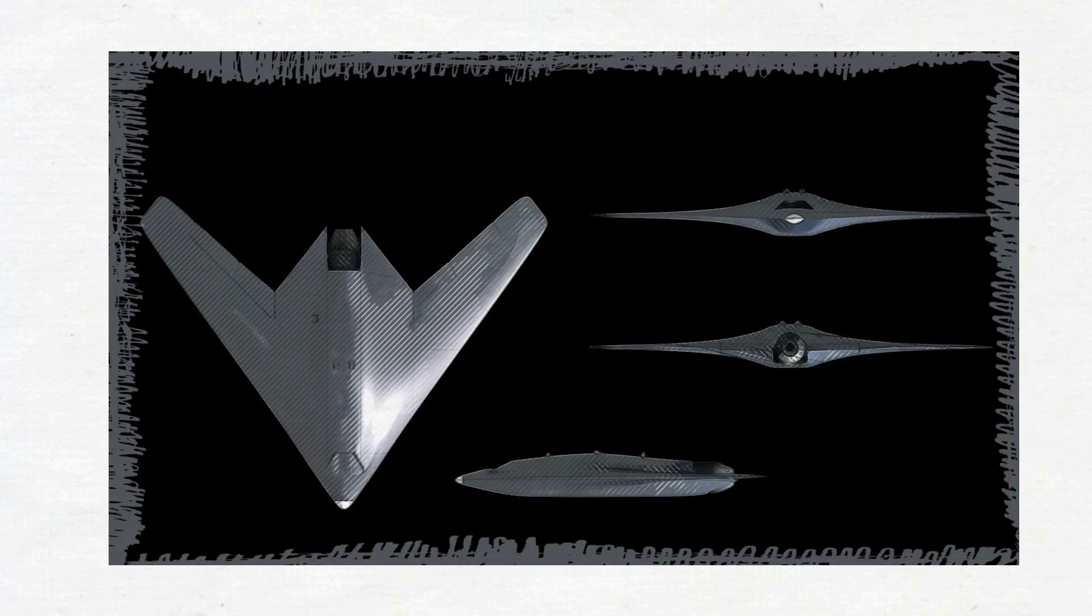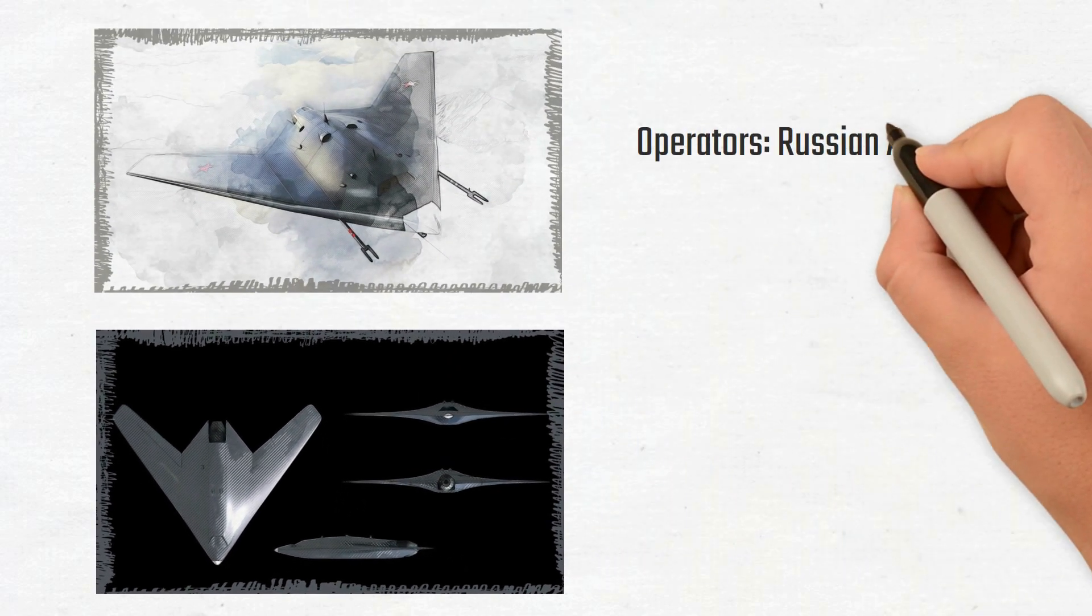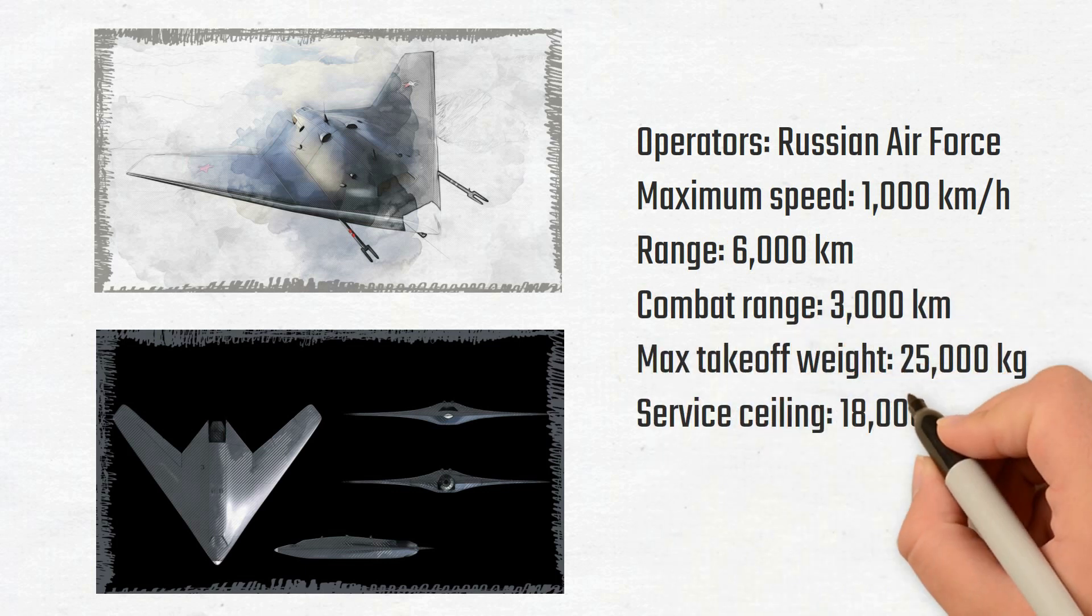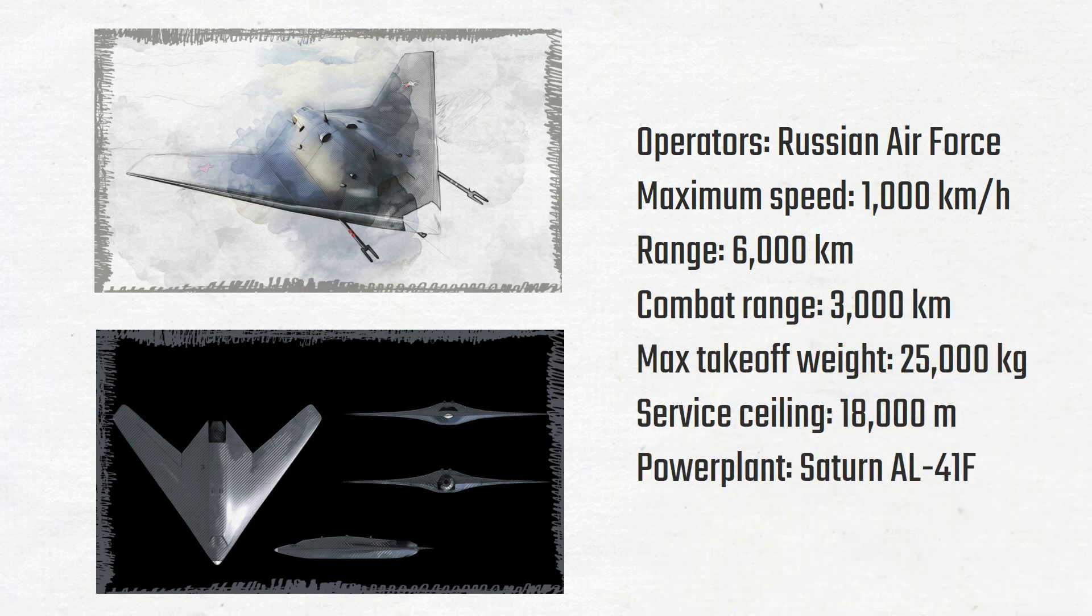The Okhotnik B has a flying wing design, a takeoff weight of around 20 tons, a top speed of about 1,000 kilometers per hour, and an operational range of about 6,000 kilometers. The drone is rumored to be powered by either the Su-35S Air Superiority Fighter's engine or the more powerful AL-31F engine.